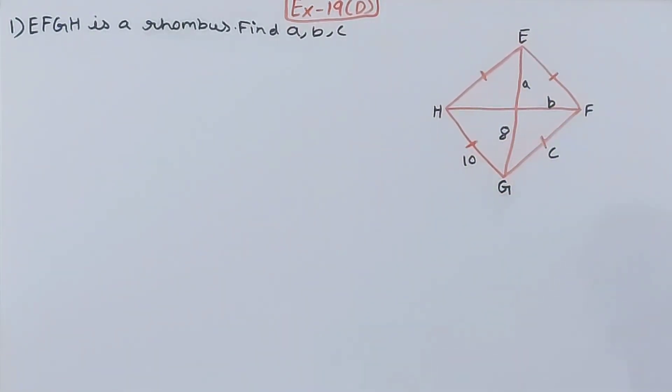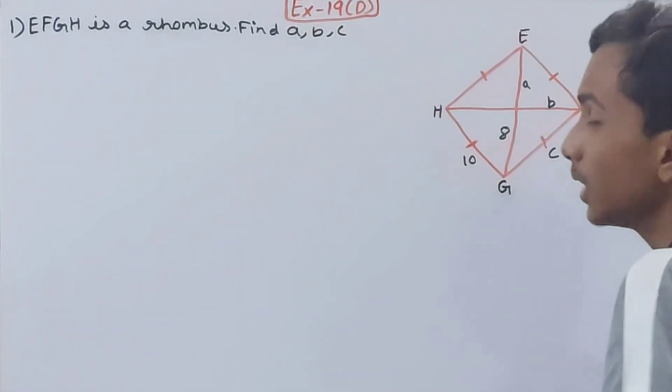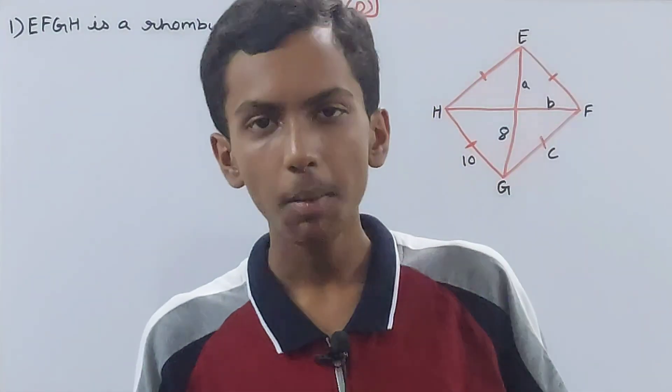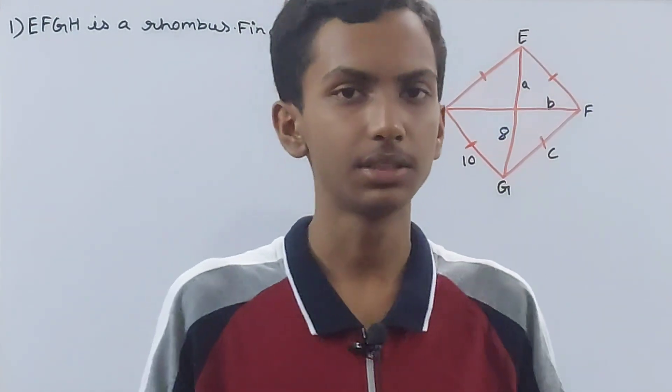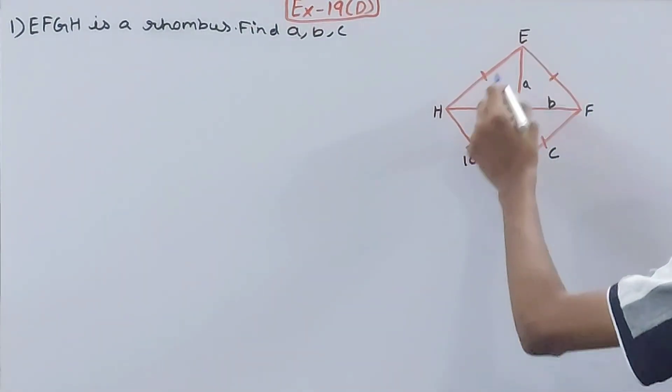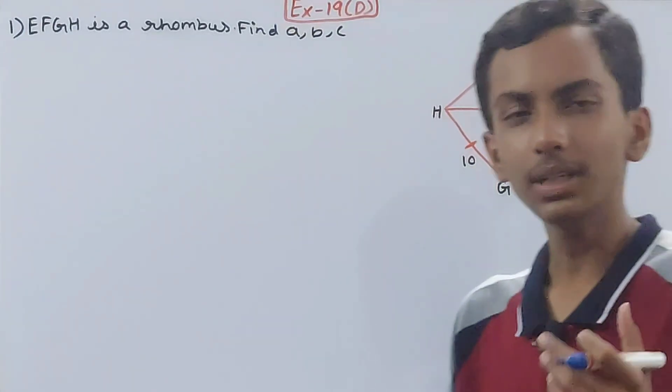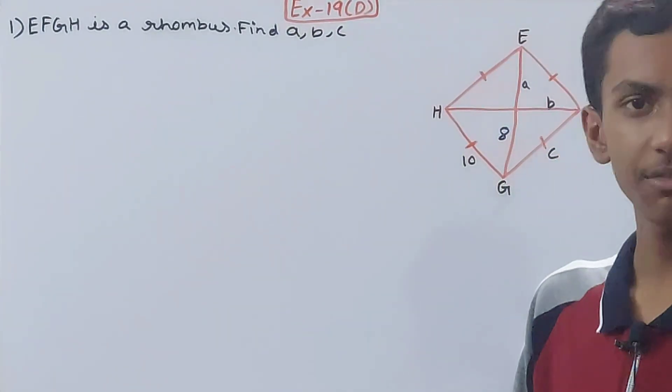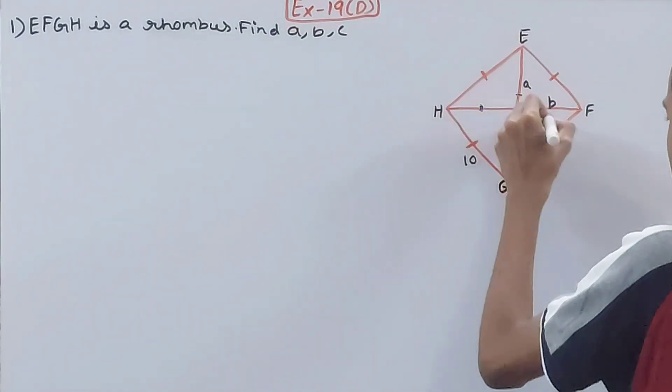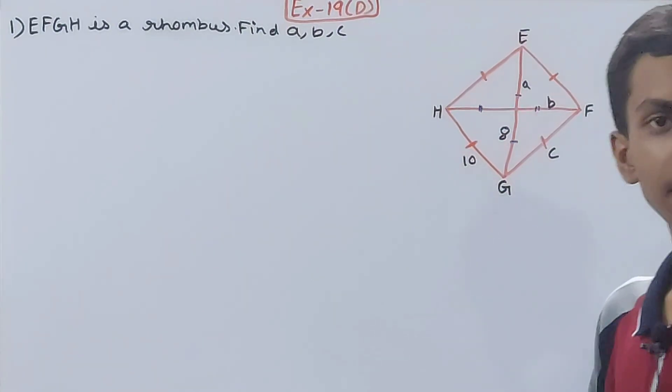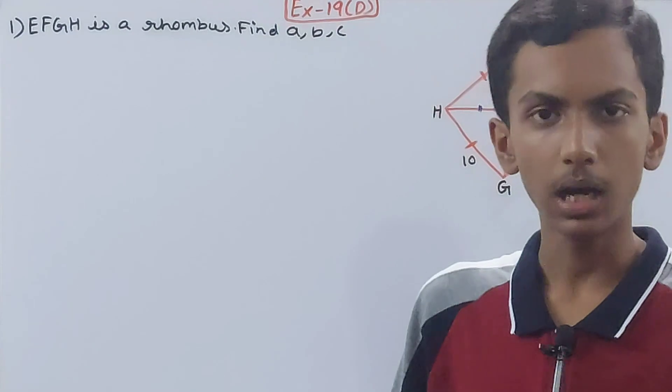First of all, we know the property of the rhombus about its diagonals: the diagonals bisect each other at right angles, at 90 degrees. In this rhombus, these are the two diagonals and you can see they are bisecting each other. This side will be equal to this side, and this side should be equal to this side. The part to the left of the center and the part to the right will be equal because the diagonals bisect.